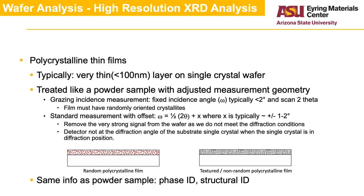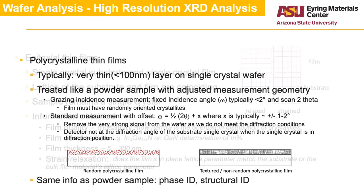The information we can obtain from polycrystalline thin films is the same as that from a powder sample. However, the signal intensity is much reduced, and collection time must be increased, especially for the more advanced analyses. In the case of thinner films, the peaks will also be much broader, further reducing the signal intensity.